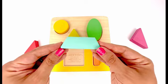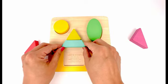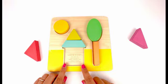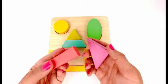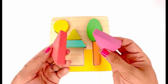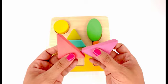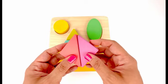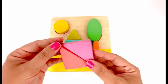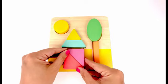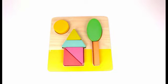This turquoise trapezoid could go underneath of the triangle. Now I have two triangles left and I need to make a square out of them. Oh look, you can make a square with two triangles just like this. Perfect.